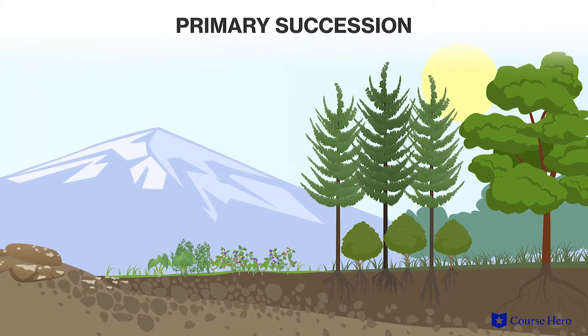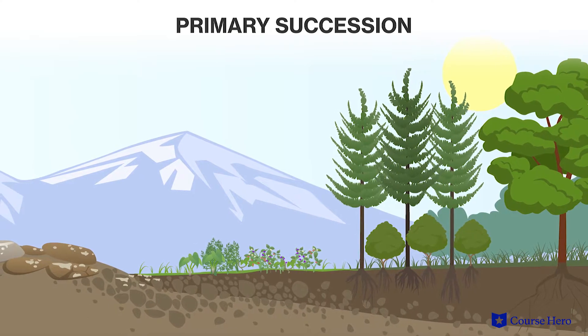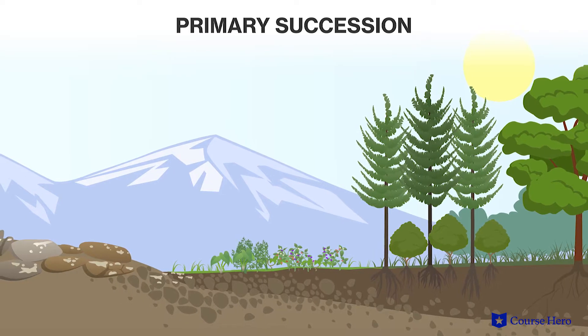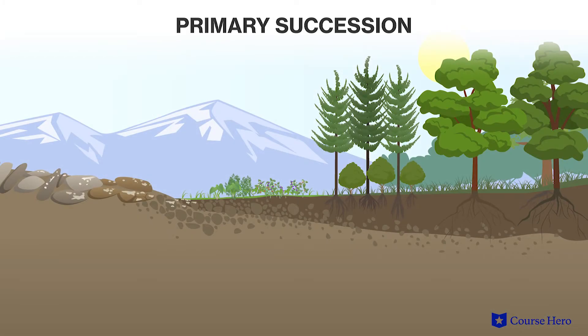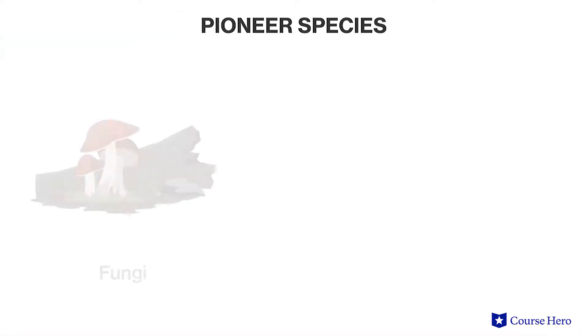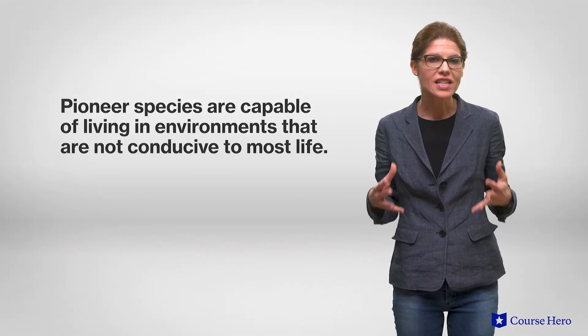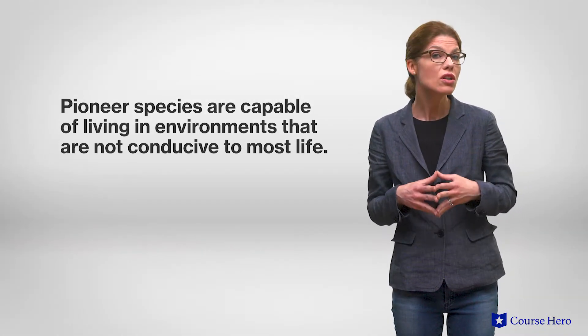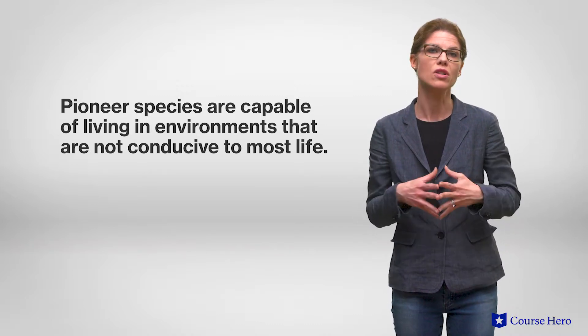Primary succession results in the formation of new ecological communities after a disturbance has completely destroyed the ecosystem and left no soil present. The process begins with an ecological disturbance, such as a volcanic eruption or a landslide, which causes new land surfaces to form and creates a barren area with no soil. These surfaces often consist of materials such as rock, sand, clay, or minerals. Typically, the first organisms, or pioneer species, that can colonize when no soil is present include fungi, bacteria, or lichens. They are pioneers because they are capable of living in an environment not conducive to most life forms and they give rise to other colonies of organisms. Gradually, over many years, more successive stages will occur, increasing biodiversity within a community.